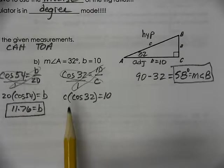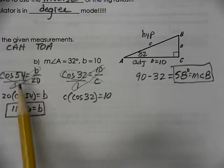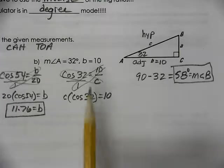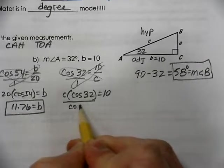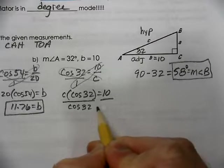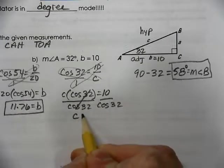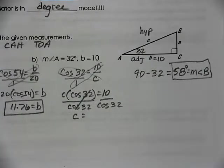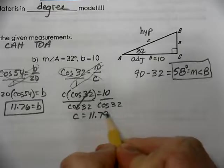Now, this is where a lot of people make a mistake. They multiply, because we multiplied earlier. They multiply cosine of 32 with 10. But think about your algebra. You have to divide by the cosine of 32 to get C by itself. So that gives us a value of 11.79.